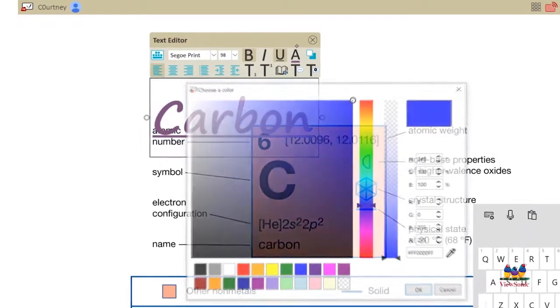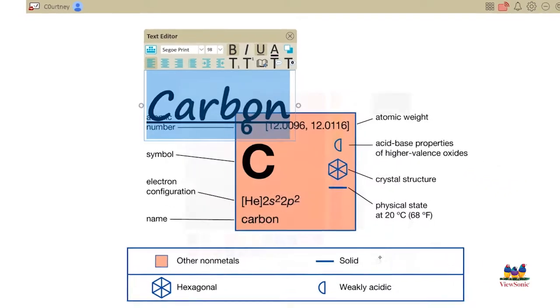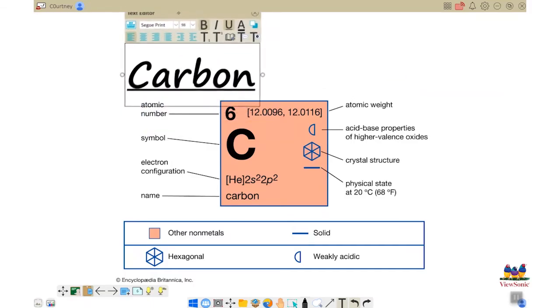Additionally, you can change the color by clicking that A with the little color bar under it, which will bring up a hex generator where you can go through and change the color. Once you're done, just press OK and it will change that body of text.